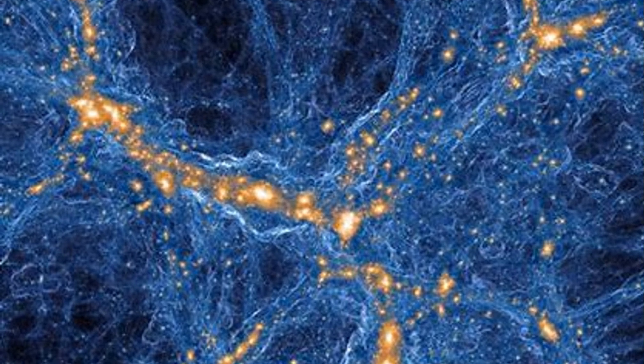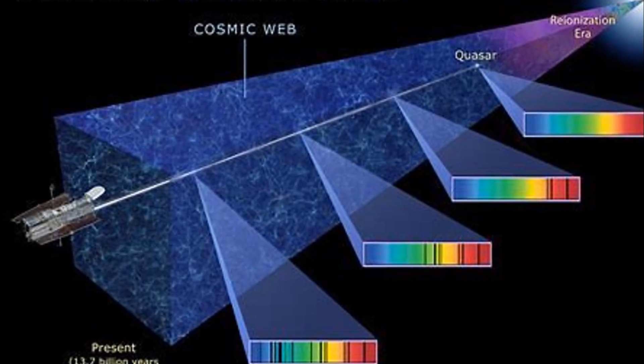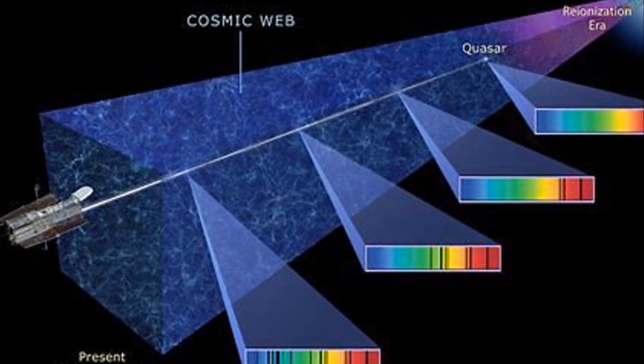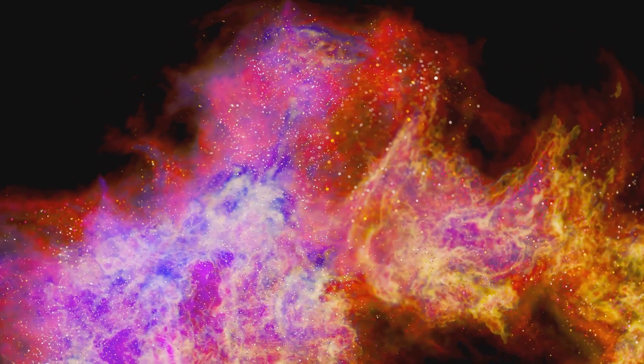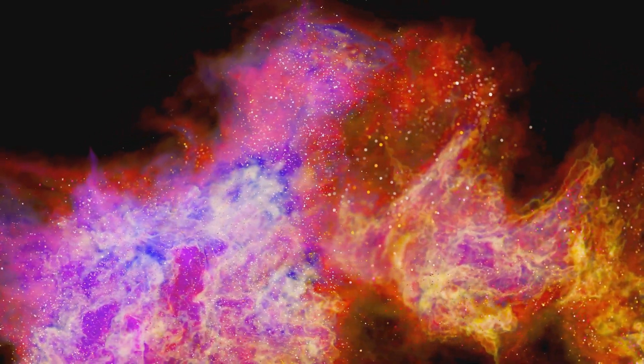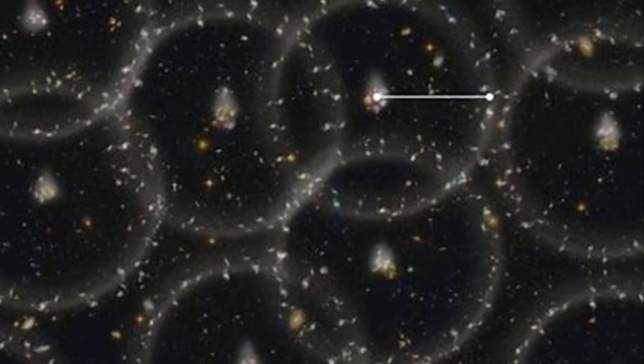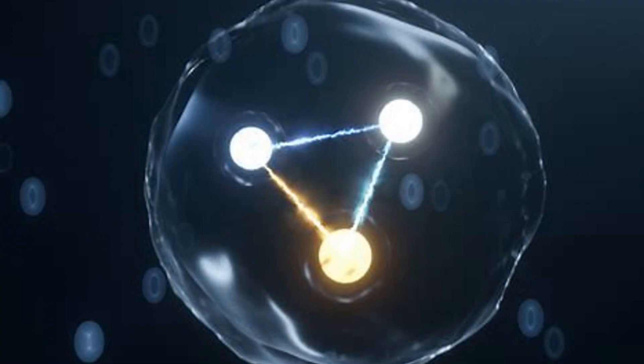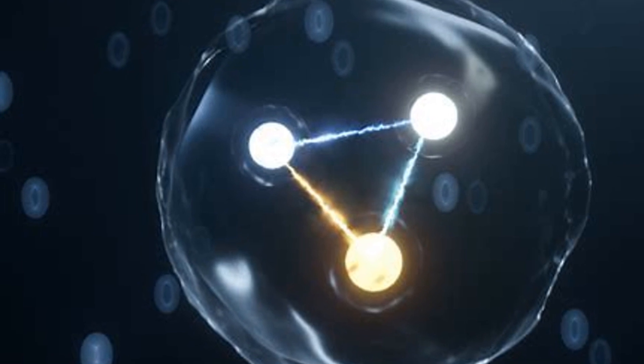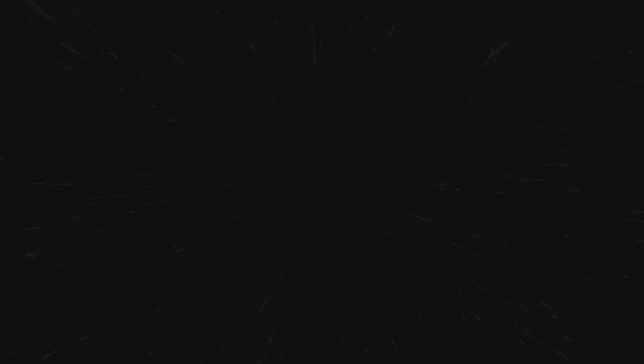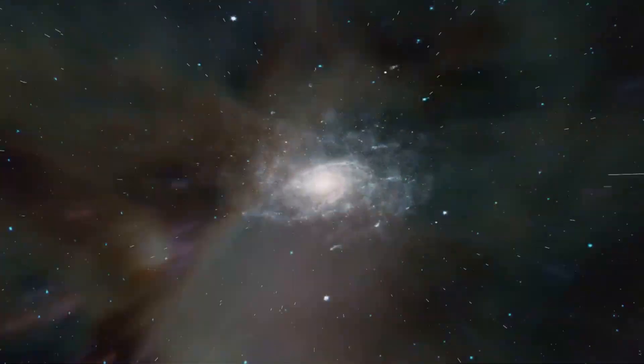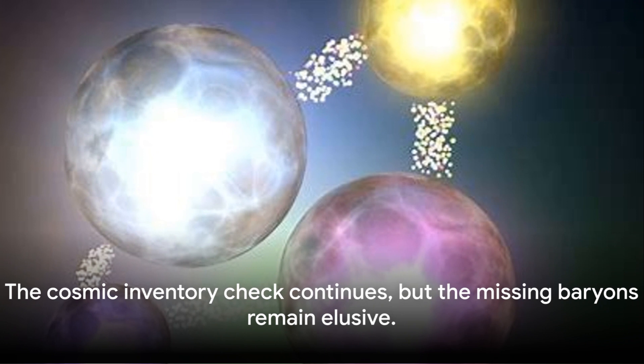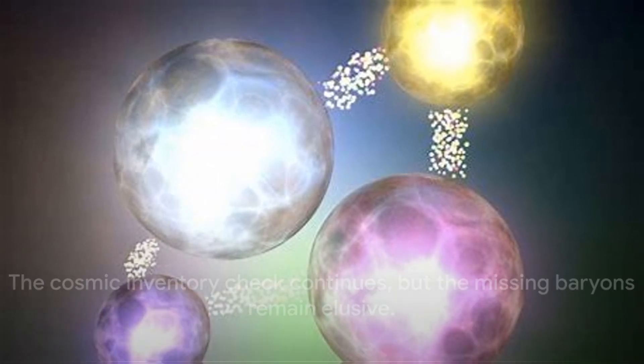So where are these missing baryons hiding? Scientists have been hunting for them, suspecting they might be lurking in the vast, hot clouds of gas that bridge galaxies. But these intergalactic regions are notoriously difficult to observe. Even with our most advanced telescopes, spotting these elusive baryons is like searching for a needle in a cosmic haystack. This missing matter mystery raises questions about our understanding of the universe. It challenges our knowledge of cosmic evolution and the formation of large-scale structures. The cosmic inventory check continues, but the missing baryons remain elusive.